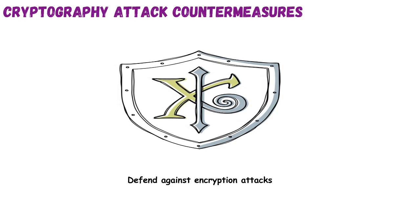We also use hashing for integrity, HSMs for key protection, and multi-factor access control. These strategies block common attack vectors and raise the difficulty of successful cryptanalysis. Attackers often exploit weak key practices or flawed implementations, not the math itself. Defenders focus on operational hygiene and adherence to cryptographic standards. To protect data effectively, countermeasures must be built in, not bolted on. It's how encryption moves from theoretical protection to actual security — a cornerstone of resilient systems.